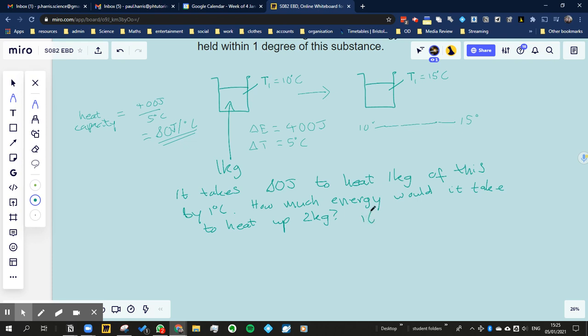Yeah, twice as much, 160 joules. So if I wanted to heat up 1 kilogram by 2 degrees C, also 160 joules, it's going to take twice as much in either of those cases. So what about if I wanted to heat up 2 kilograms of this stuff by 2 degrees C? How much energy would that take? So it takes 160 to heat up 1 kilogram by 2 degrees C, so 2 kilograms, it will take twice as much. So 320 joules. Good.